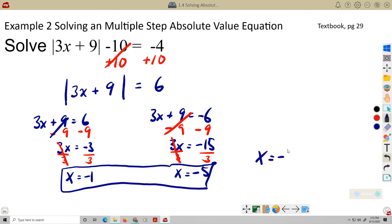So I have two solutions: x equals negative 1 and x equals negative 5. Maybe an easier way to write this is negative 1 comma negative 5.